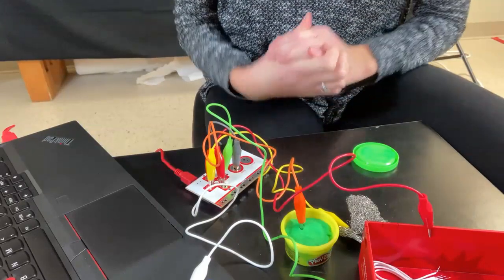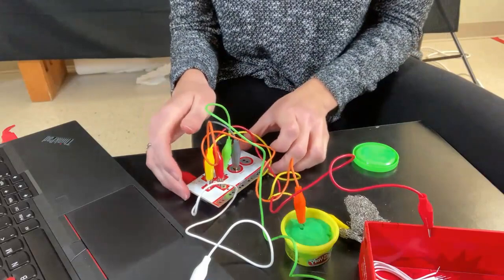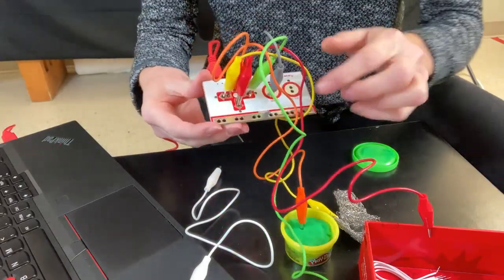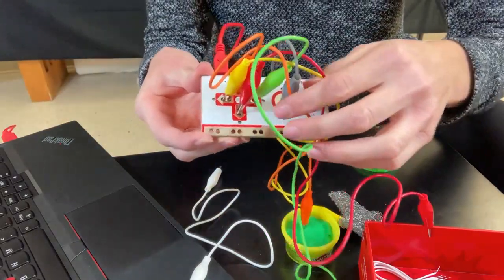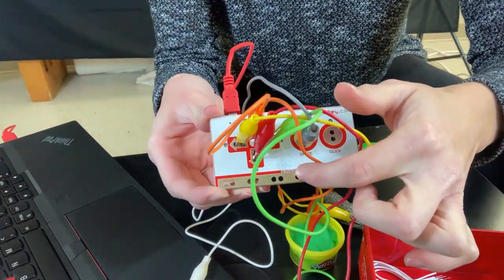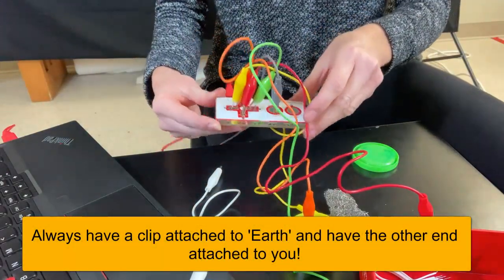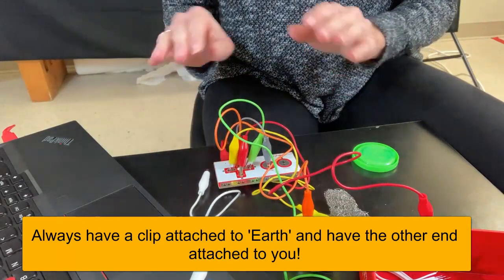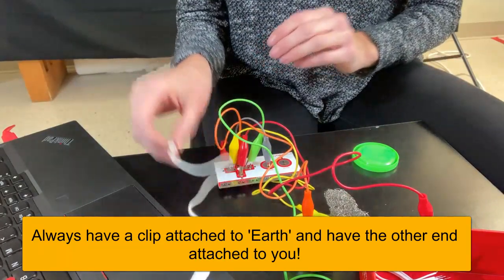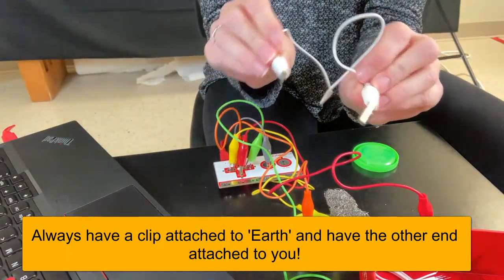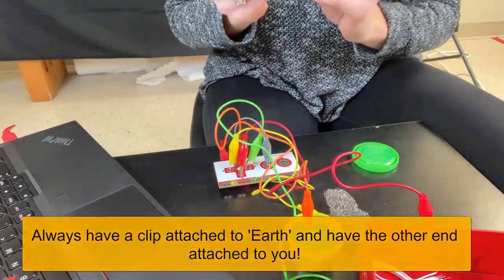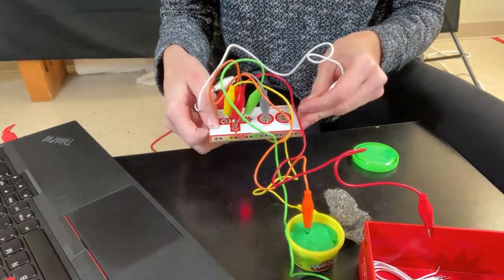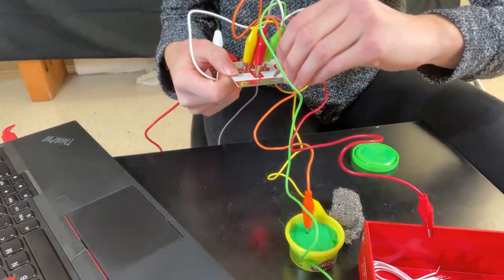Now I will show you why the most important part of your controller is this bottom panel. If you look really closely, it says earth. Now something always needs to be attached to that to make any of the other buttons work. So I'm going to use my white alligator clip here and you can attach to any one of these little prongs. So I'll attach one end there.